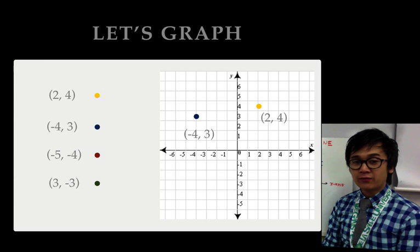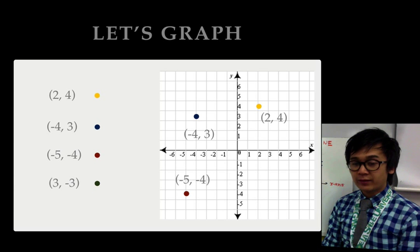For our third point, which is negative 5 for x and negative 4 for y, we'll have it on this particular quadrant, which is quadrant 3. So, this is (-5,-4).